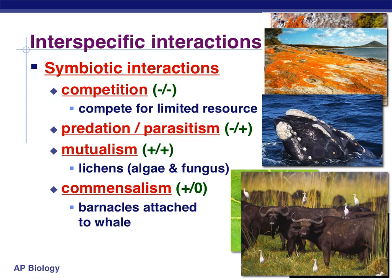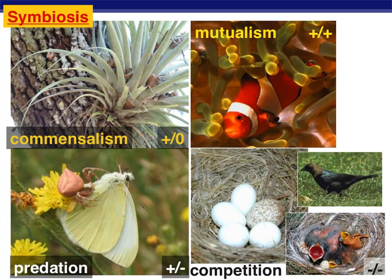Here are some examples of animals that exhibit these different interactions. Bryophytes are types of plants that sit on top of trees to get closer to sunlight. A spider killing a butterfly is predation. A bird trying to have another bird raise her young is a form of competition — when that egg hatches, it will compete with the host's babies for food. And there's mutualism where both organisms benefit from their relationship.